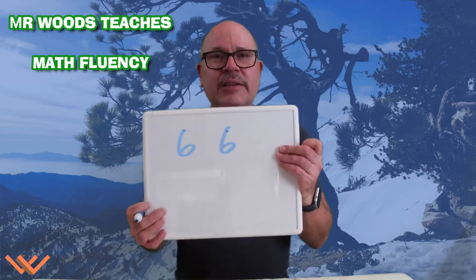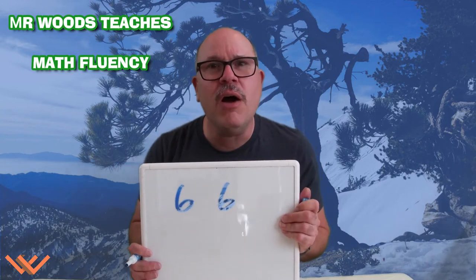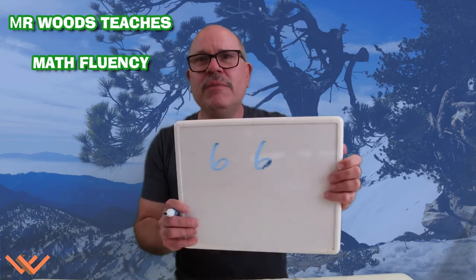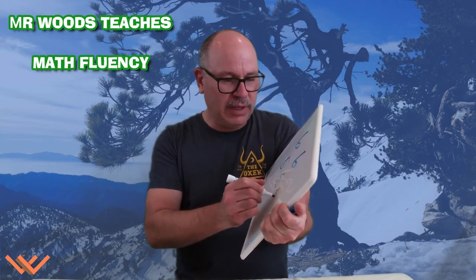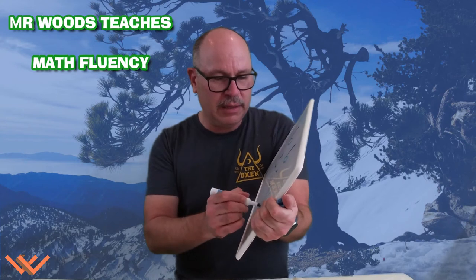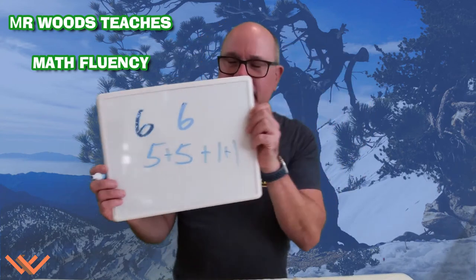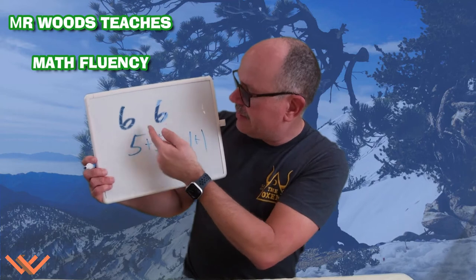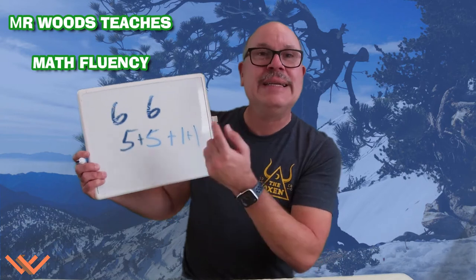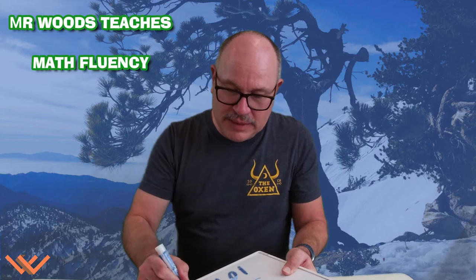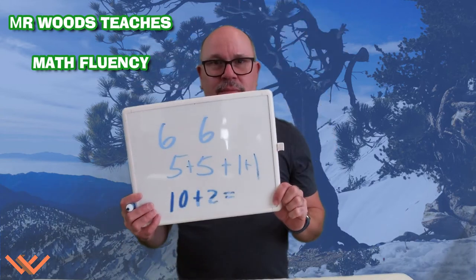So what if we have 6 and 6? Well, let's break it down, because you already know what this is. Just recall, it's 5 and 5 plus 1 and 1. Look at that — 6 and 6 is 5 plus 5 and 1 and 1. And 5 and 5 make 10, and 1 and 1 make 2. 10 plus 2 equals 12.